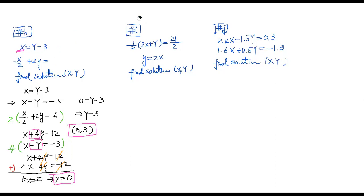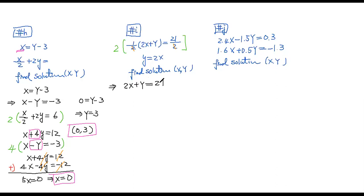Now let's look at the second problem. The first equation is one-half times (2x + y) equals 21 over 2. The second equation is y equals 2x. I don't like the fraction, so let's multiply both sides by 2. The one-half and 2 cancel, simplifying the first equation to 2x plus y equals 21.